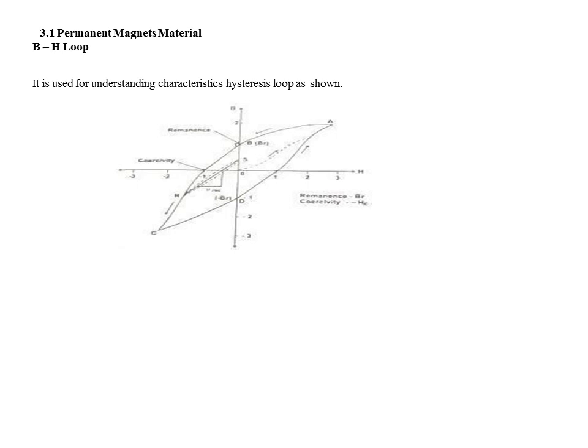This is the B-H loop of permanent magnet material. It is used to understand the characteristics of hysteresis loop. Here the magnetizing force or field intensity H is taken on the X-axis. The magnetic flux density B is taken on the Y-axis.